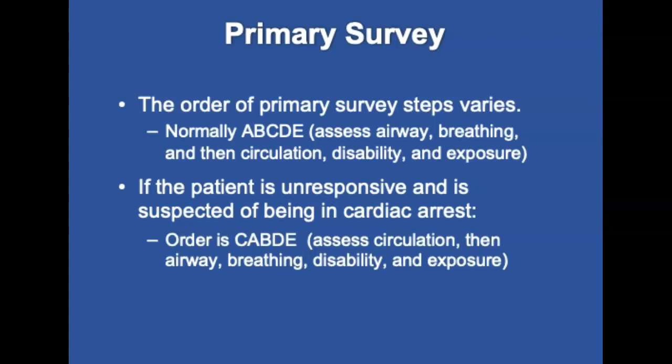The order of steps in the primary survey is normally A, B, C, D, E — assess airway, breathing, circulation, disability, and exposure. If the patient is found unresponsive and is suspected of being in cardiac arrest, the order changes to C, A, B, D, E — because we're doing circulation first, starting chest compressions, then airway and breathing.